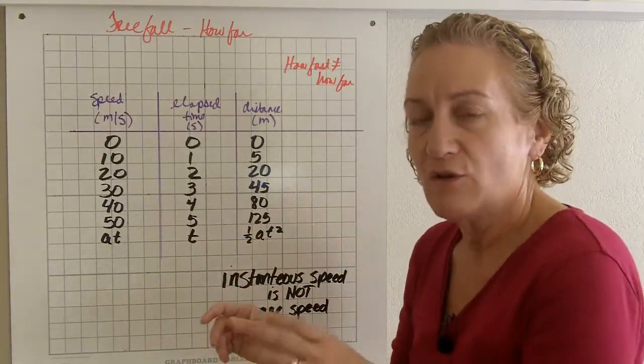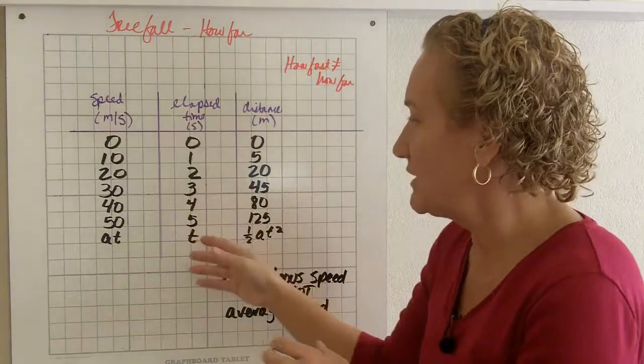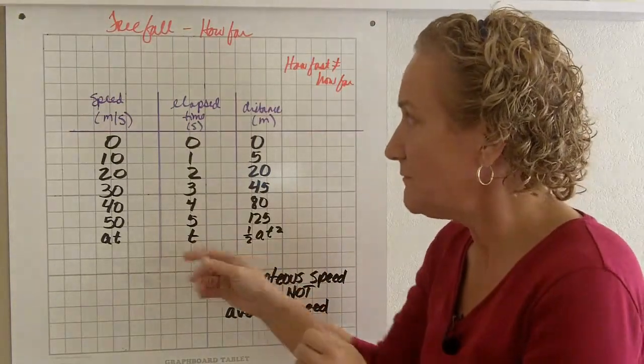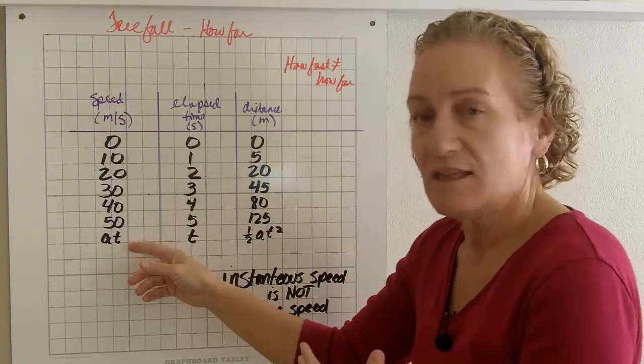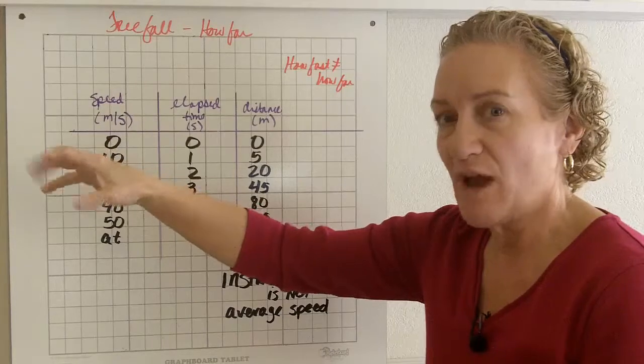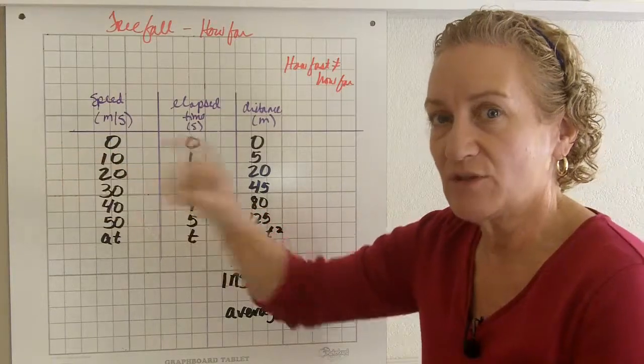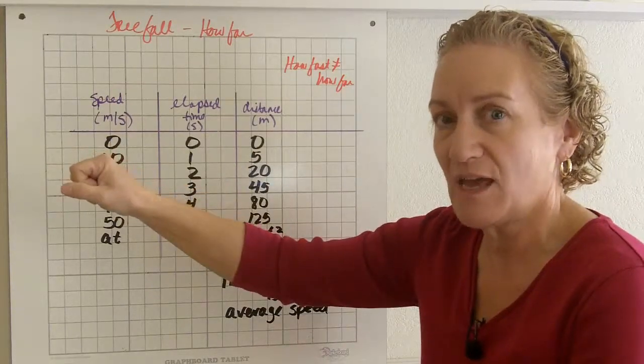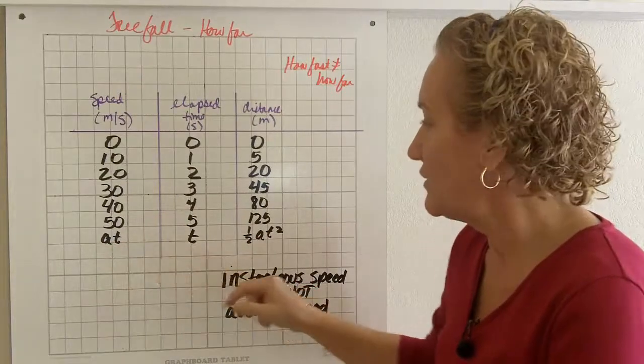So if instead of calling time a number, we just give it a letter like t, the speed that it's going is acceleration times time. Now that's assuming we start when we just drop it and she has no initial acceleration or velocity. We're going to talk about that in just a minute. Velocity is acceleration times time.